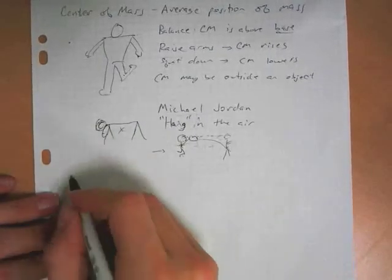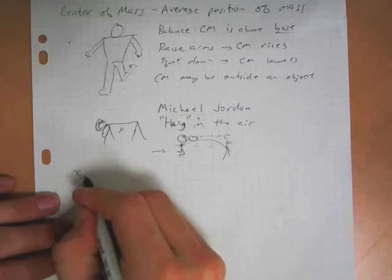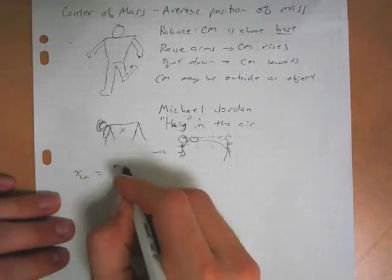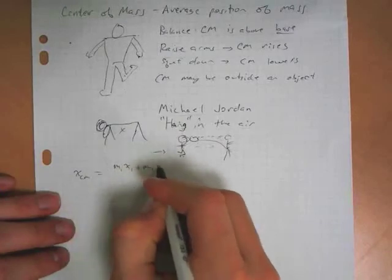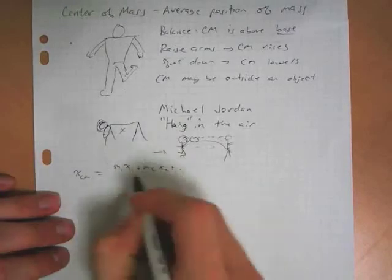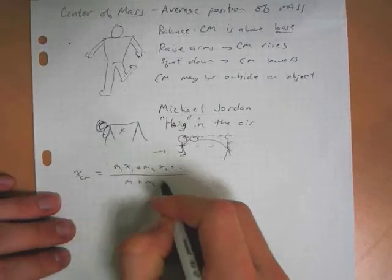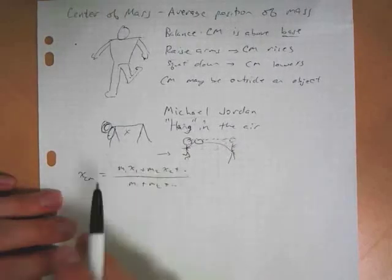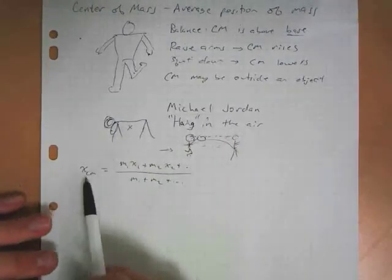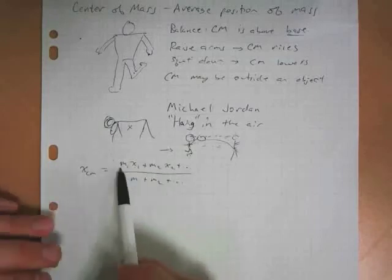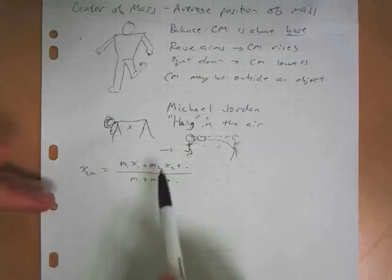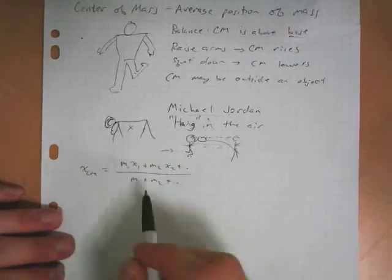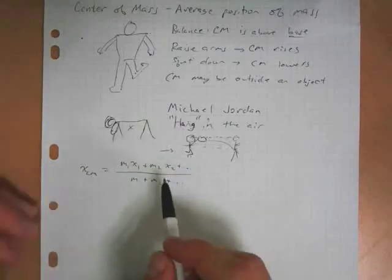So the center of mass is still following kinematic equations, but he would appear to be hanging in the air because his upper body wasn't really moving downward as much. The center of mass, we've got an equation for center of mass. As I said, it's just the average position of all of your masses. So you have mass one times its position plus mass two times its position, and you could have as many masses as you want.